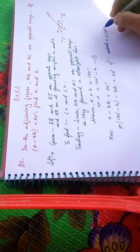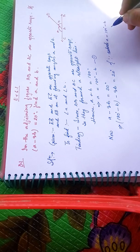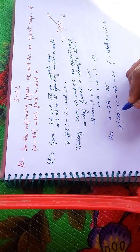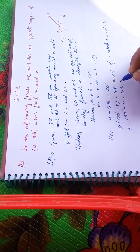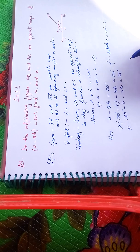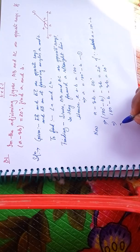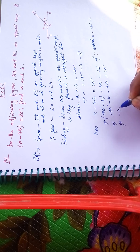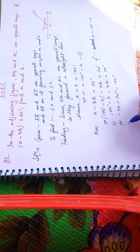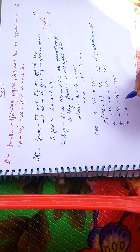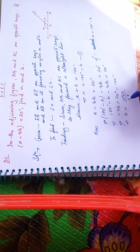Substituting, we get 180 degrees minus B minus 3B equals 20 degrees. This simplifies to 180 minus 4B equals 20 degrees. Therefore, minus 4B equals minus 160 degrees, so B equals 40 degrees.